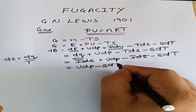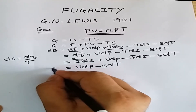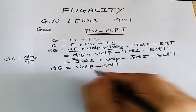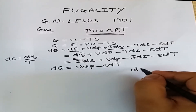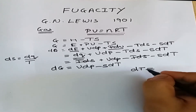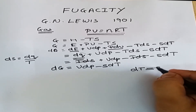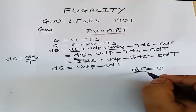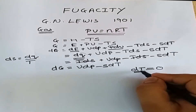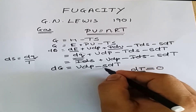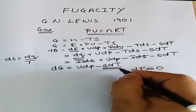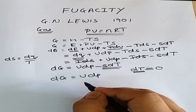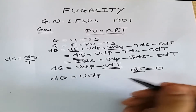So dG = VdP - SdT is the relation for free energy. Now if we consider that our system is isothermal, the temperature remains constant, so dT = 0. This term becomes zero, and we can write dG = VdP.